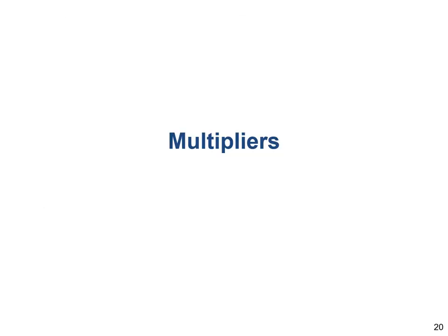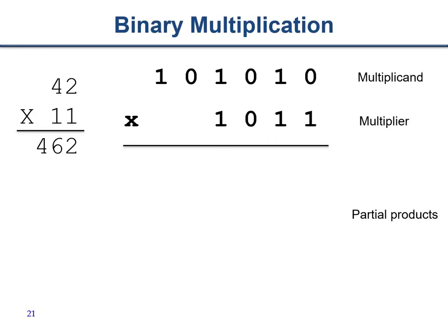So far we've only looked at adders and touched on subtractors. But we also have to build other blocks such as multipliers. Implementing multipliers sounds scary — adders were complicated enough — but it turns out that for various reasons there are some restrictions that simplify the base implementation to something we can fairly readily grasp.